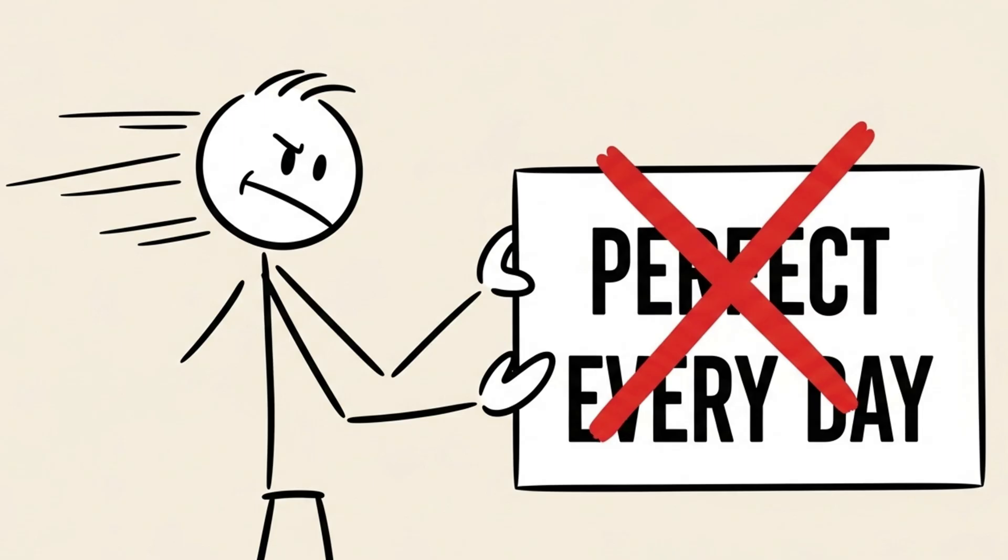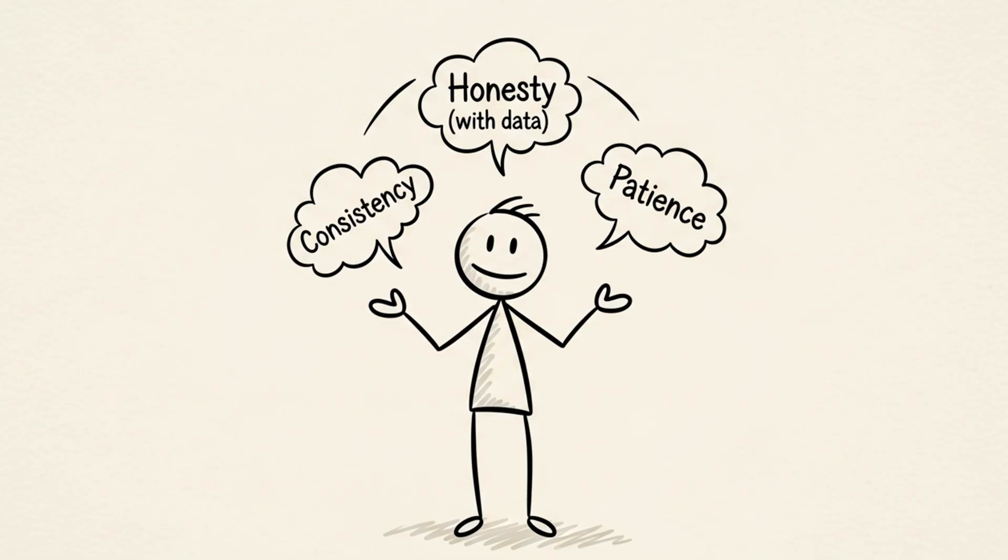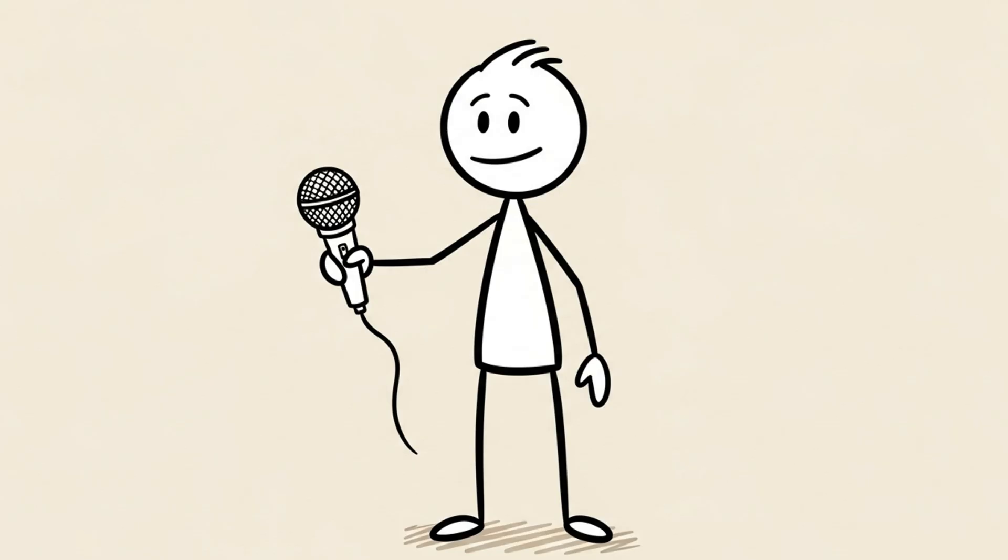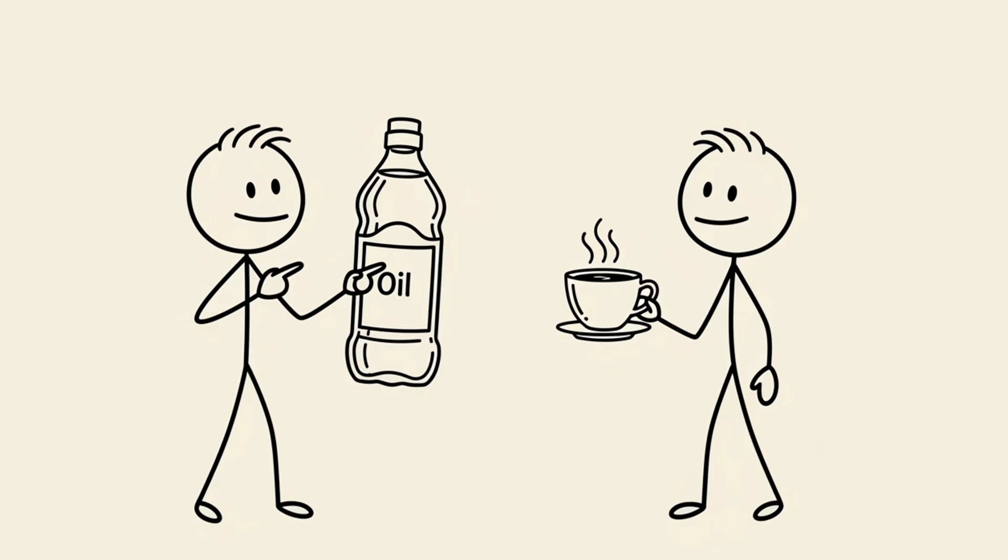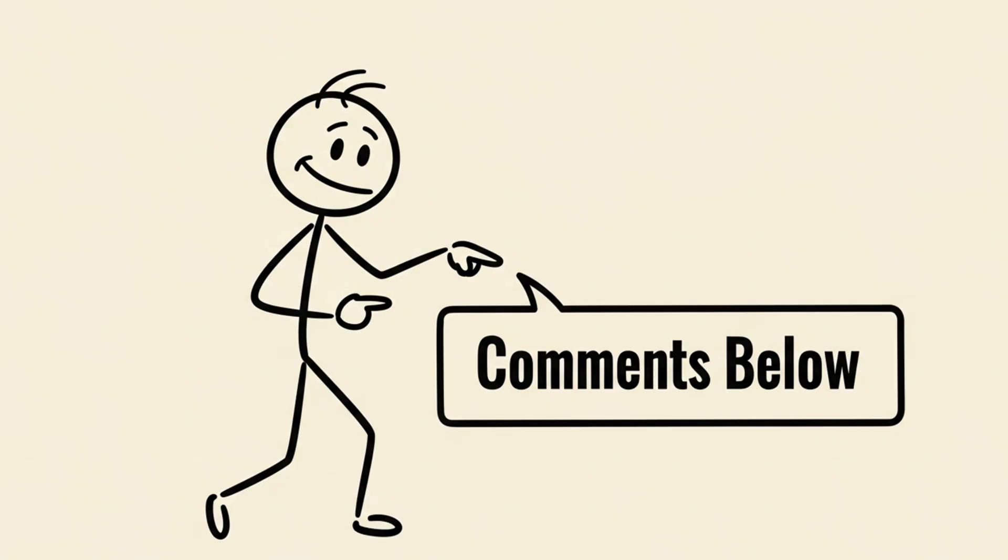The key isn't to be perfect every day. The key is to be consistent and honest with your data. And to be patient with your body. Now, I want to hear from you. What was the number one hidden calorie you discovered in your own diet? Was it cooking oil? Was it your morning coffee? Comment below. I want to know your story.